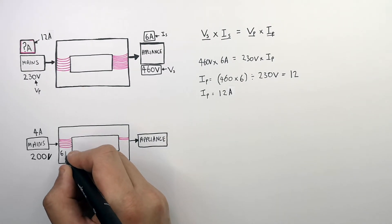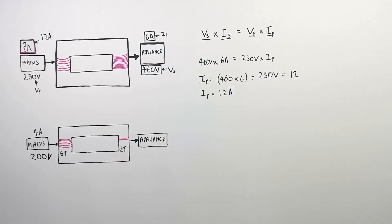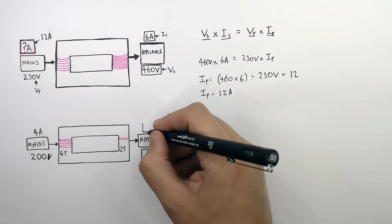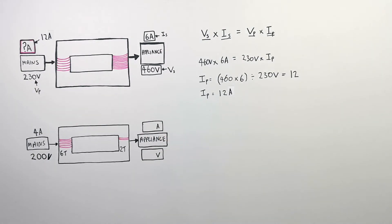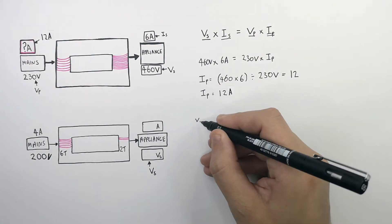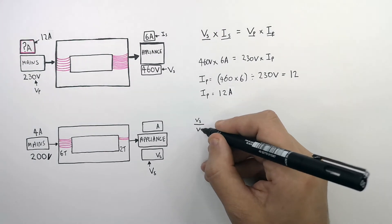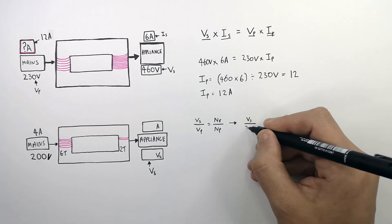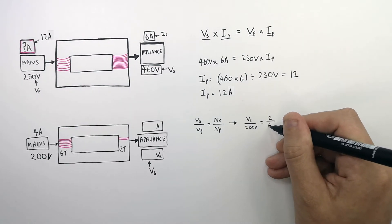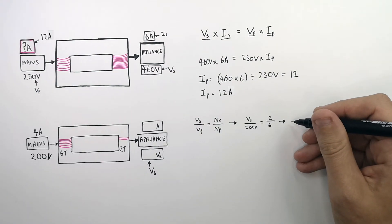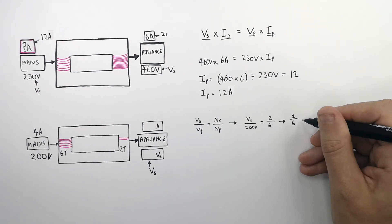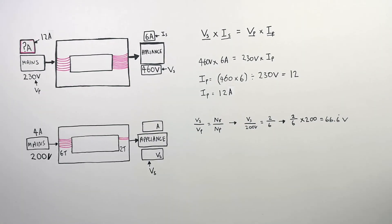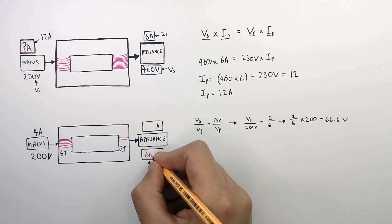There are 6 turns in the primary coil and 2 turns in the secondary coil. We need to find the potential difference across the secondary coil. Using the equation VS over VP equals NS over NP, we substitute: VS divided by 200 volts equals 2 turns divided by 6 turns. Rearranging, VS equals 2 over 6 times 200, which gives 66.6 recurring volts. So VS, the potential difference across the secondary coil, is 66.6 volts.